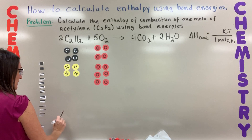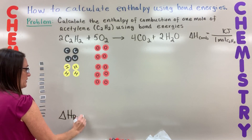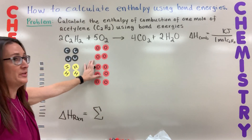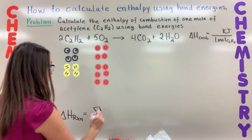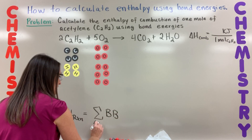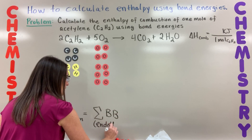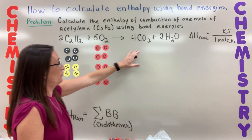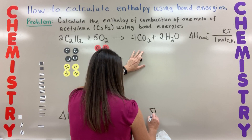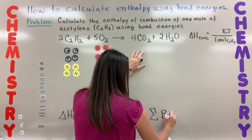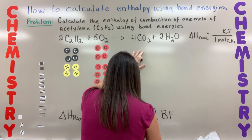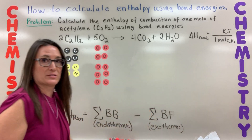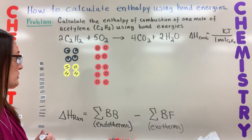I'm going to show you the equation we're going to use. The enthalpy of any reaction can be estimated by taking the sum of all the bonds broken — that's endothermic — and then subtracting the sum of all bonds formed, which is exothermic. I'll call it BF for bonds formed, and that's why we have the negative sign. That's the equation we're going to use.